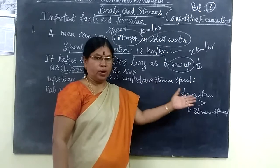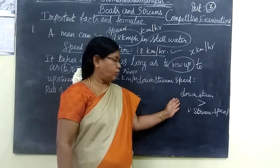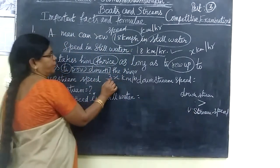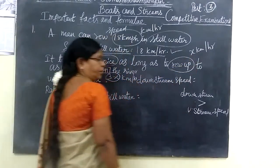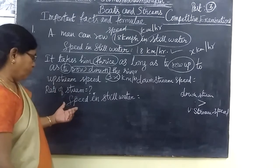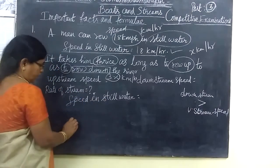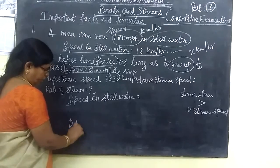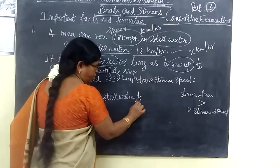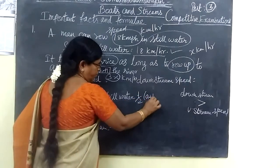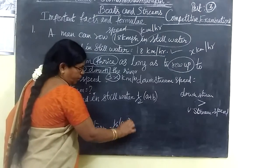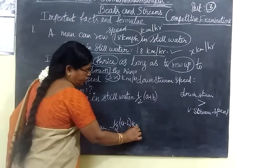Upstream means the opposite direction, so it is less. We are going to find the rate of stream speed. We know speed in still water. Now we form the formula: speed in still water = half bracket (A plus B) km per hour, and rate of stream = half bracket (A minus B) km per hour.